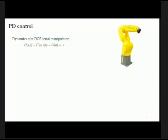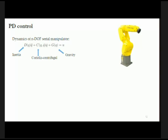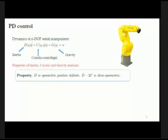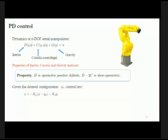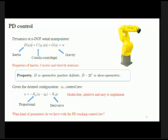When I say robotic system, I am referring to Euler-Lagrangian dynamics: you have an inertial matrix, a Coriolis centrifugal matrix, a gravity vector, and an input U. Think of it as a serial manipulator. D is symmetric positive definite, and D-dot minus 2C is skew-symmetric — these are all very useful properties for showing stability results. A PD control law for going to a desired constant setpoint is: Kp times (Q minus Qd) plus Kd times Q-dot. The first term is the proportional term and the second is the derivative term. This is model-free, very intuitive and very easy to implement.